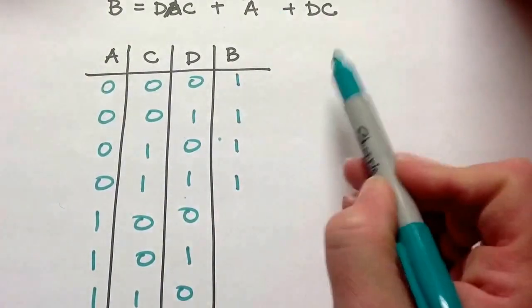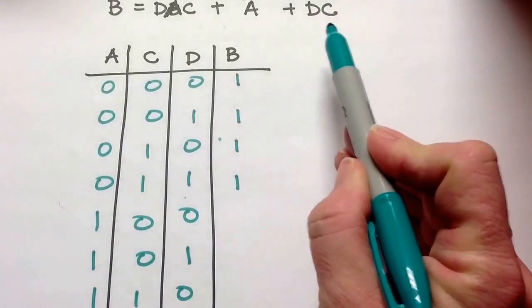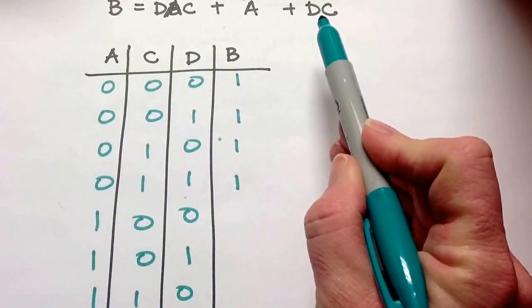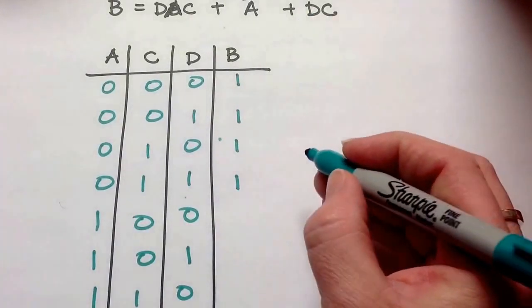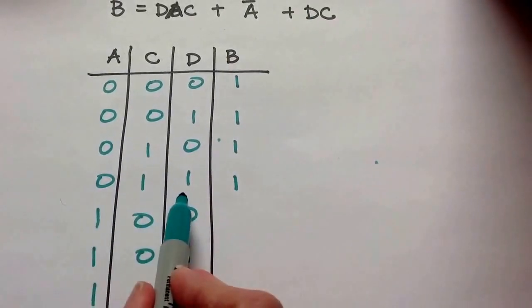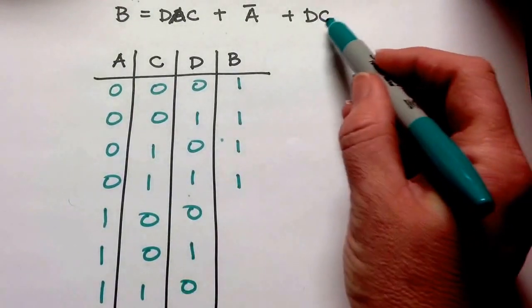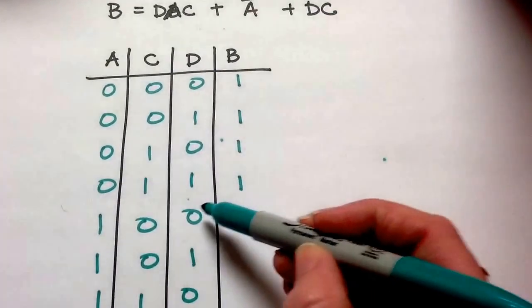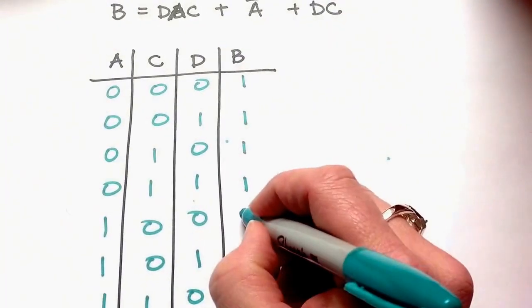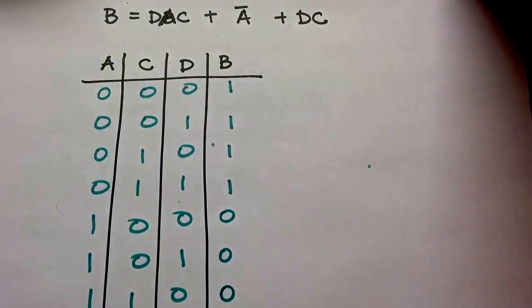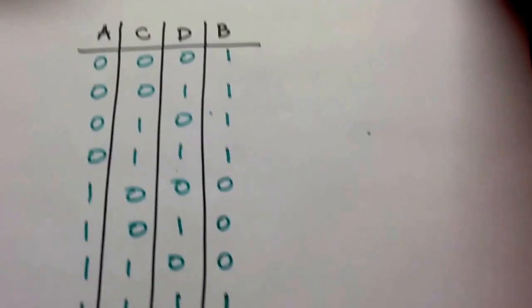And then this last term says DC. So I want C and D to both be a 1, and I don't care what A is. So C and D are a 1, well, that one's already a 1. And then C and D are a 1, not here, not here, not here. Here they are, but it's already a 1. So that's my truth table.